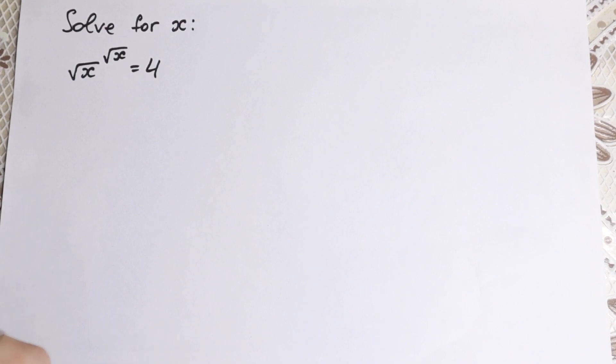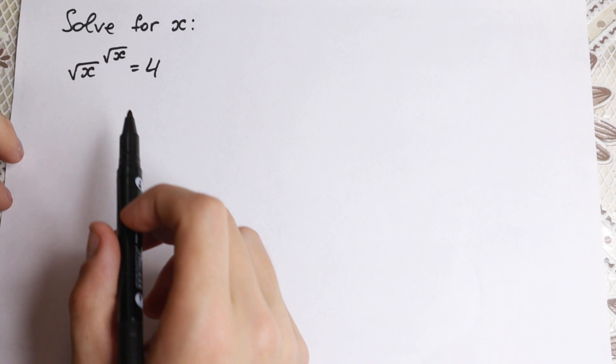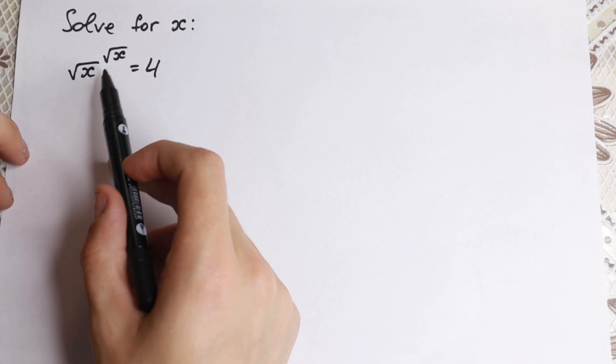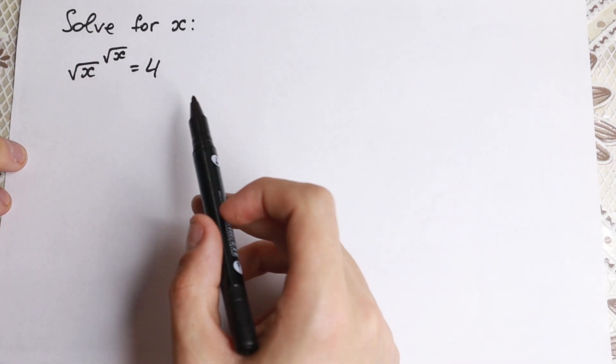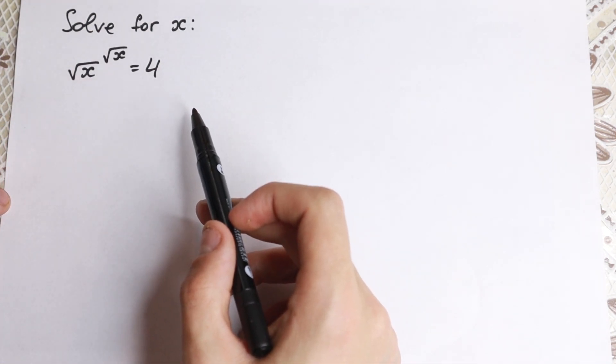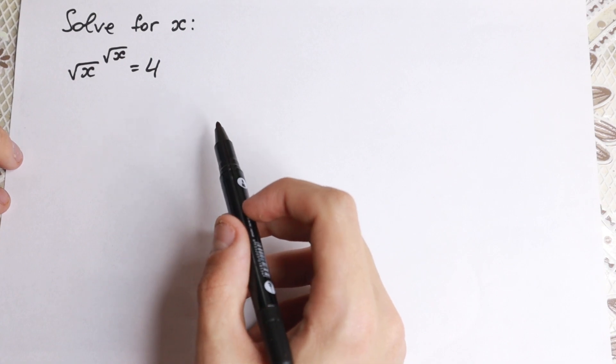Hello everyone! Welcome back to Higher Mathematics! We have a really interesting exponential equation: square root of x to the power square root of x equals 4, and we need to find x.